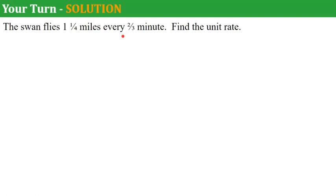Welcome back. Here's our solution. So our unit rate is going to be miles per minute instead of miles for 2/3 of a minute. So we have a complex fraction here. I'm going to rewrite 1 and 1/4 as an improper fraction, 5/4, divided by 2/3. So we're going to change this to multiply by the reciprocal. The reciprocal of 2/3 is 3/2.